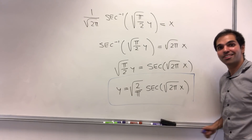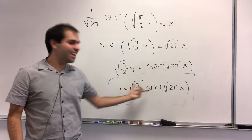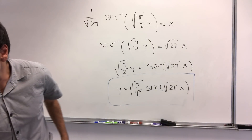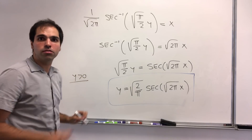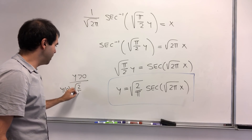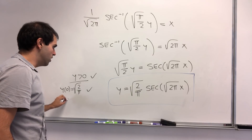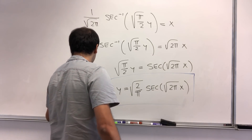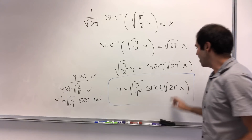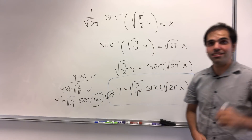And this, ladies and gentlemen, is the function whose derivative equals the surface area — y = √(2/π) · sec(√(2π) · x). Who would have thought? Let's quickly verify it satisfies our conditions. Yes, it is positive, at least for a short interval containing 0. And y(0) = √(2/π) · 1 = √(2/π). The derivative is √(2/π) · sec(√(2π)x) · tan(√(2π)x) · √(2π), and because of that tangent factor, y'(0) = 0. So it satisfies all three initial conditions.